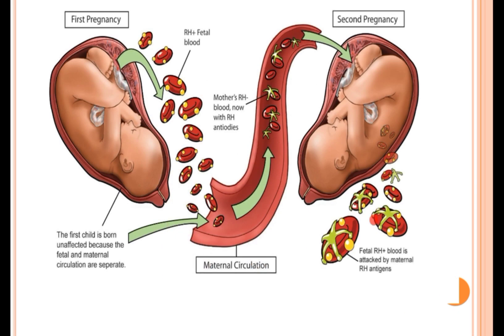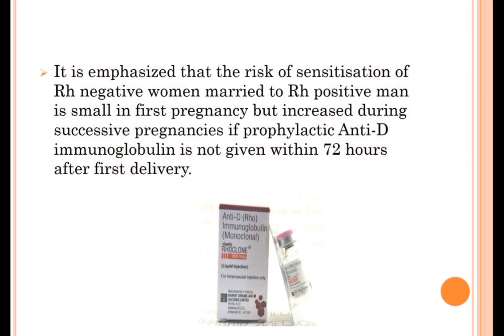The first child born is unaffected because the fetal and maternal circulations are separate. During parturition, RH positive fetal blood may cause sensitization of the mother to form RH antibodies. Therefore, during further pregnancies, fetal RH positive blood is attacked by maternal RH antibodies. The risk of sensitization of an RH negative woman married to an RH positive man is small in the first pregnancy, but increases during successive pregnancies if prophylactic anti-D immunoglobulin is not given within 72 hours after the first delivery.